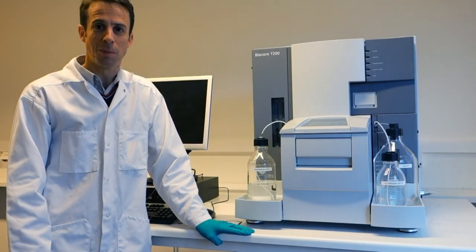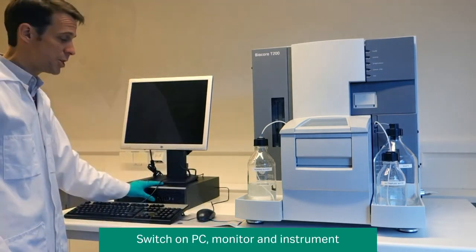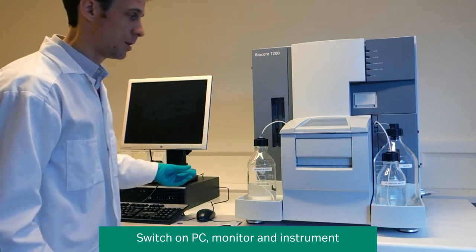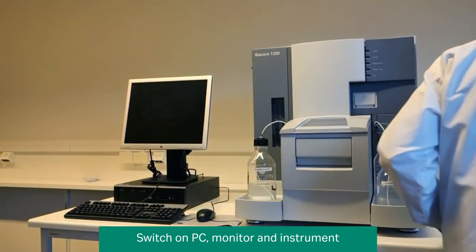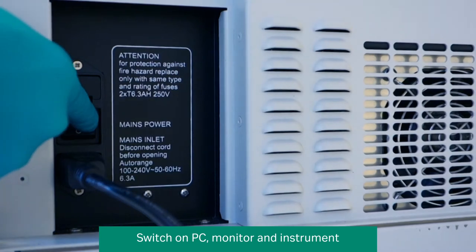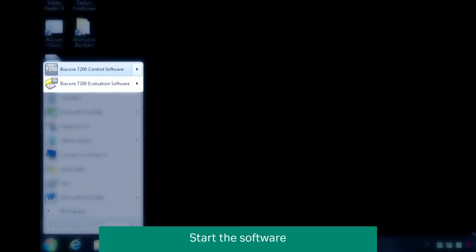Let me tell you how to start up and prepare a Biacore T200 system for use. Switch on the PC and the monitor, then switch on the Biacore T200 by pressing the button located on the back of the instrument. Start the Biacore T200 control software from the Windows Start menu and click on the control software icon.